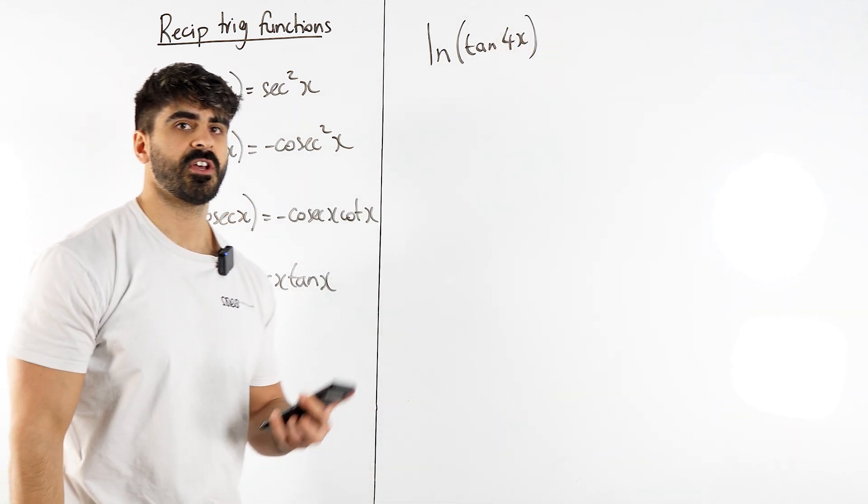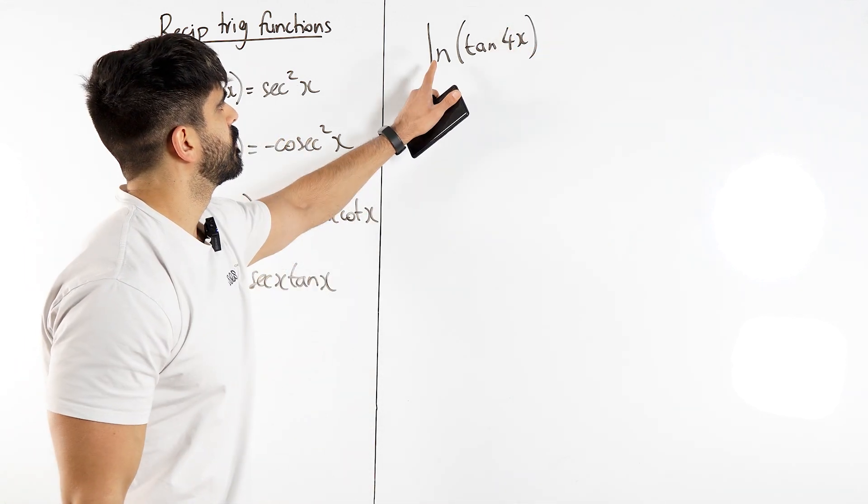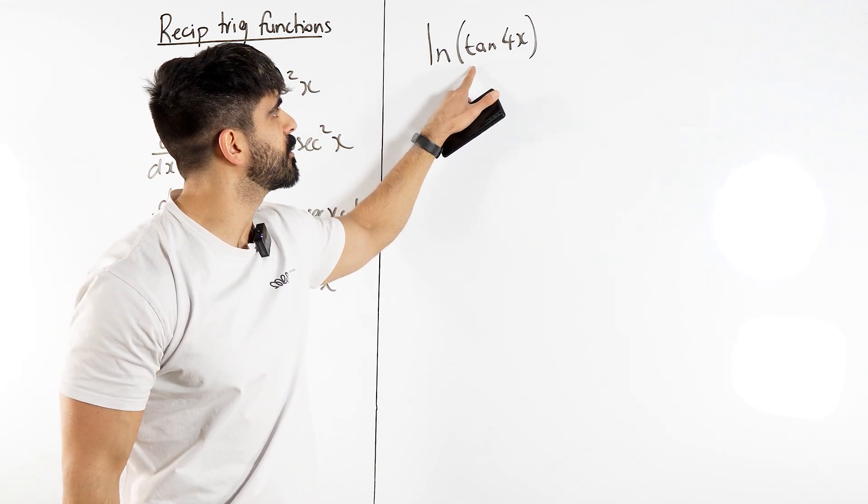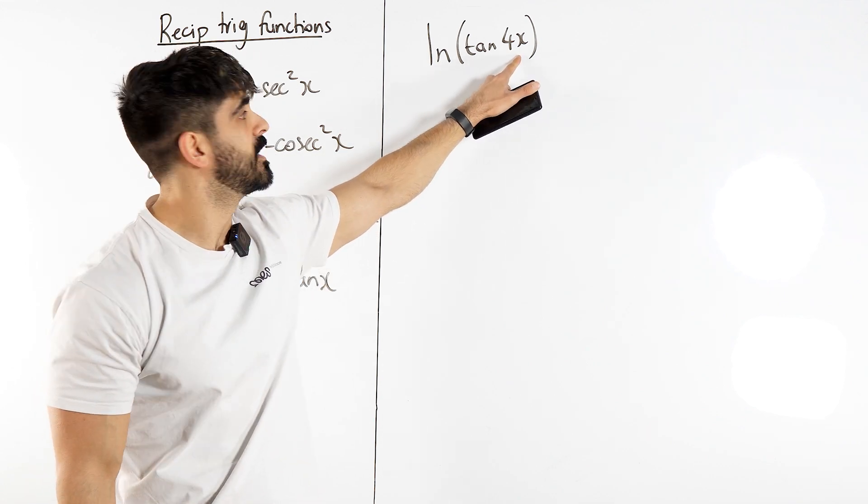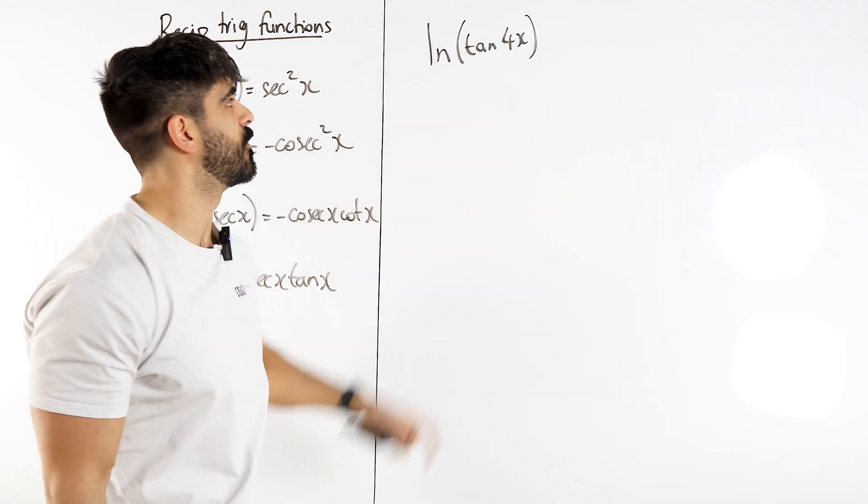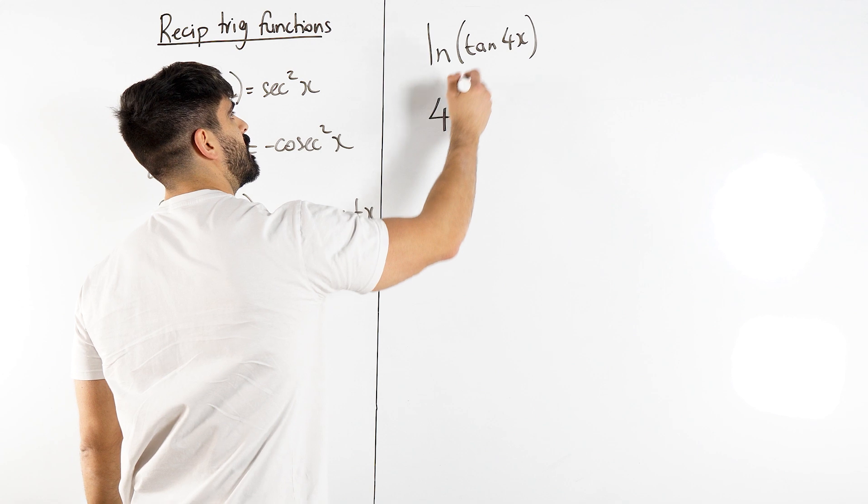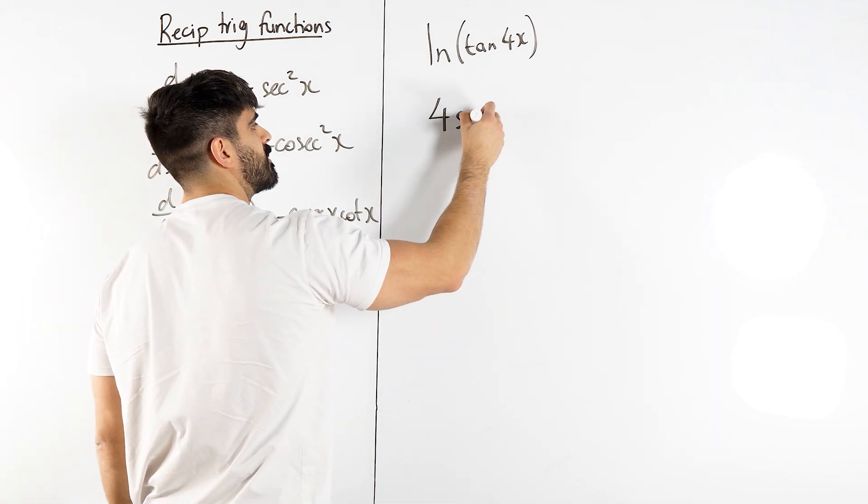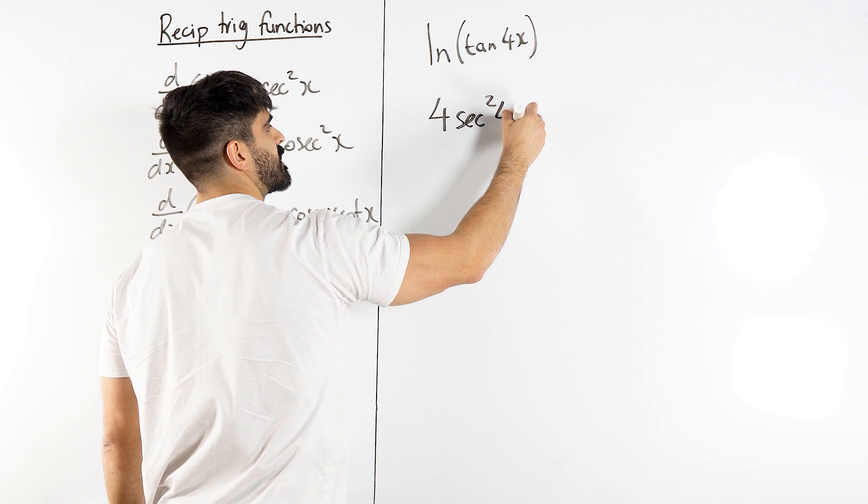Now to differentiate this, what do we do first? ln, argument. We differentiate the argument first. I want to differentiate tan 4x. Focus on the tan 4x only. We differentiate the angle first. 4x differentiates to 4. Tan differentiates to sec squared, and then the angle stays the same.